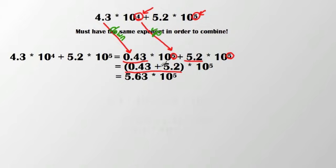So I have 0.43 plus 5.2 times 10 to the 5th. My final answer then becomes 5.63 times 10 to the 5th.